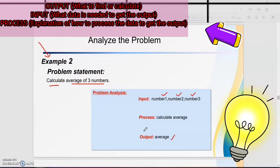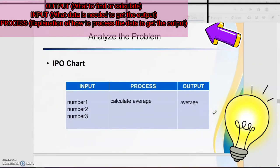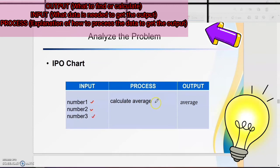For process, the explanation of how to process the data to get the output is: calculate average. For the IPO chart, use a table to write the input, process, and output. For input: number one, number two, number three. For process: calculate average. And the last one, output: average.